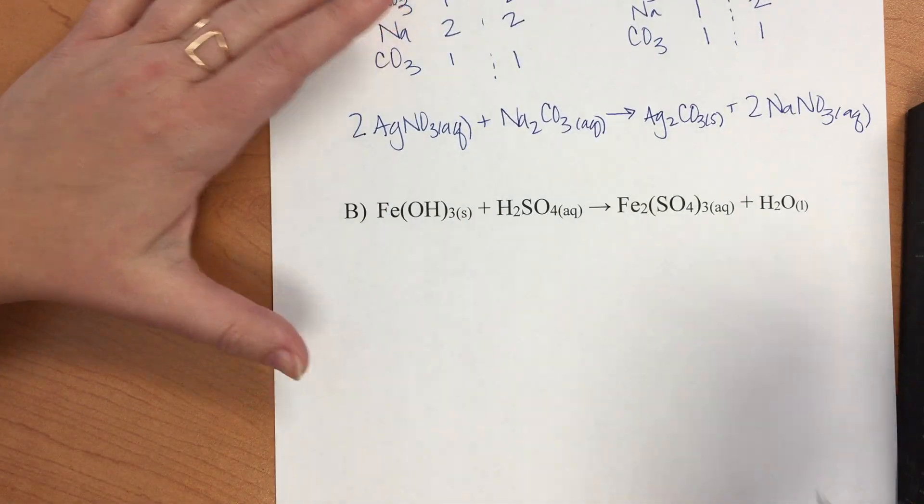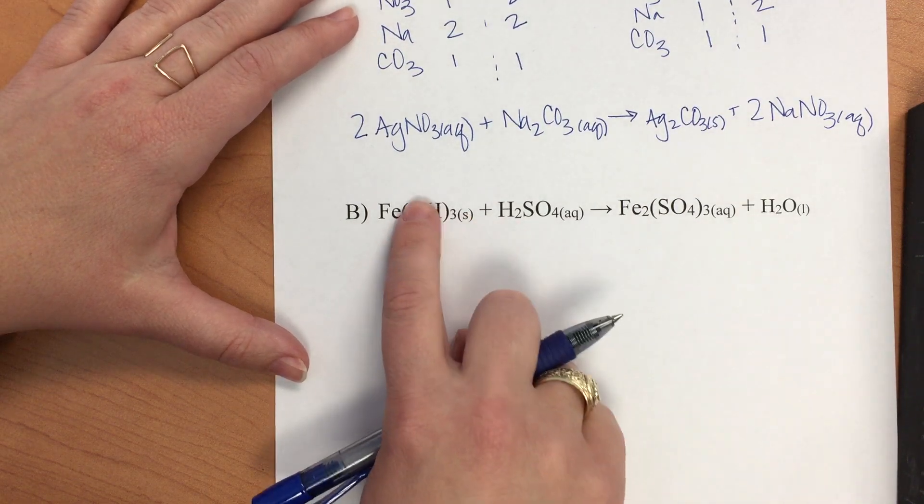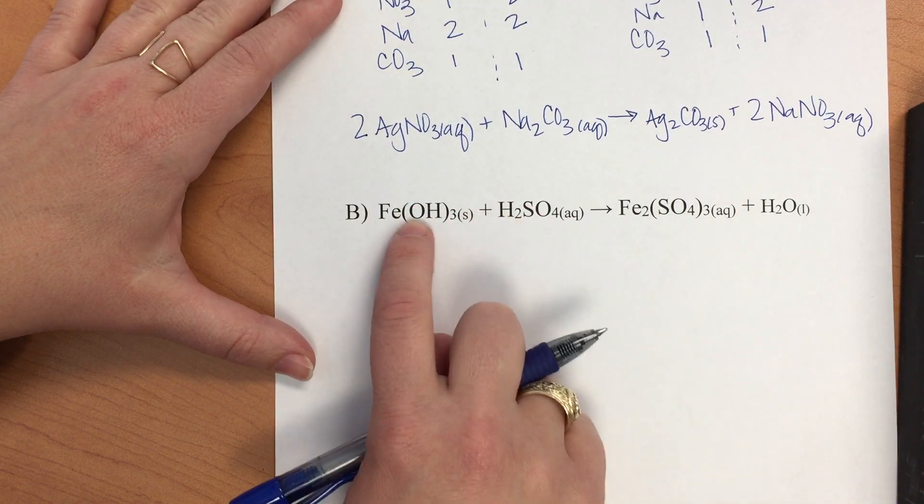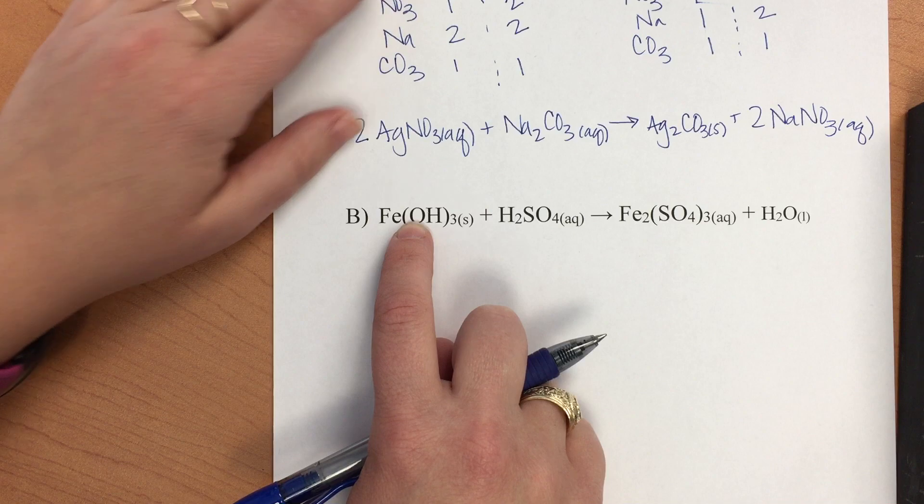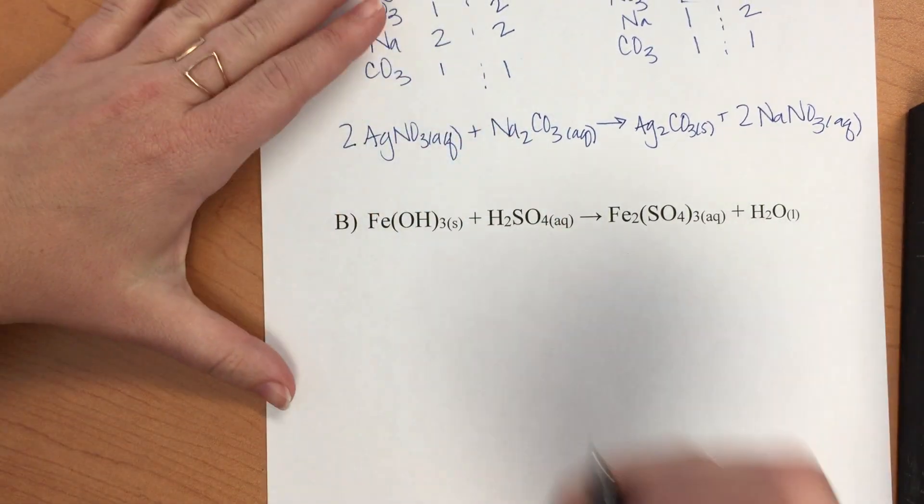We'll start with iron. It turns out we can find the OH here in the water, and then we can find the H plus two, and then we can also find the SO4.